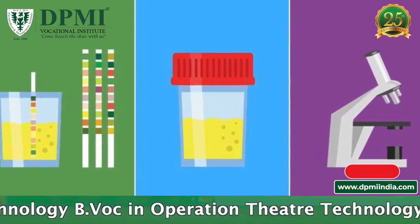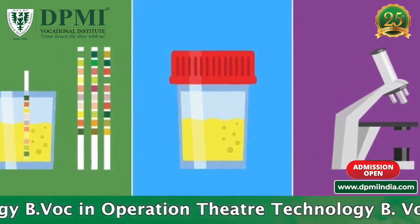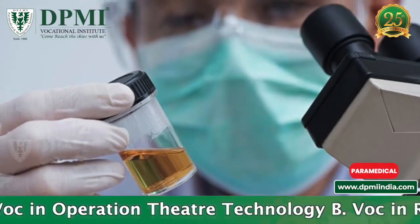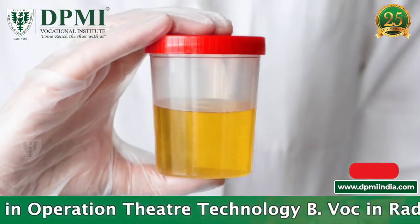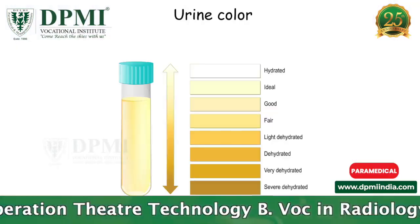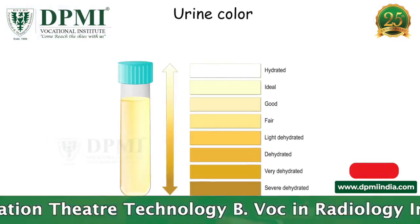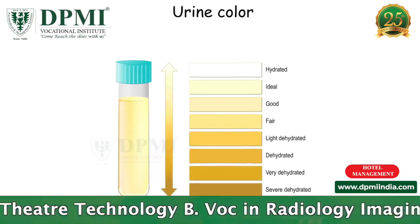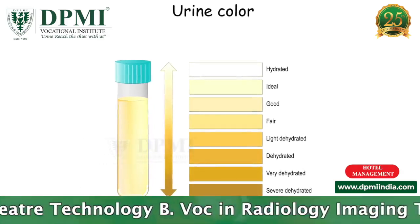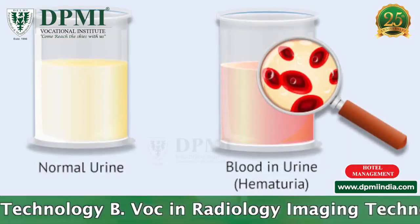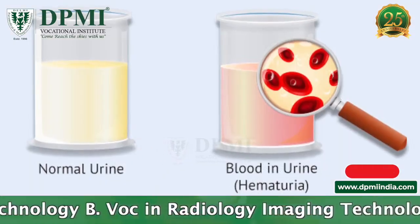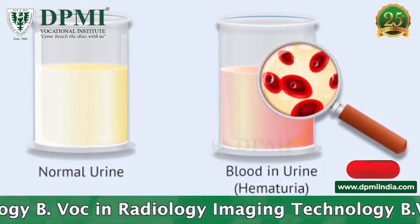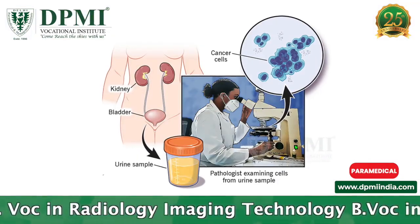Urinalysis evaluates urine in three main ways: visual examination, microscopic exam, and dipstick test. In a visual examination, a healthy person has nearly clear urine. A darker color may indicate dehydration or other medical issues.